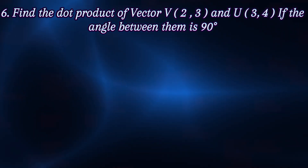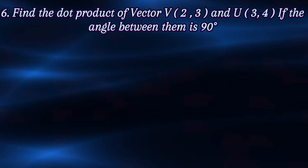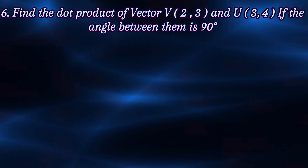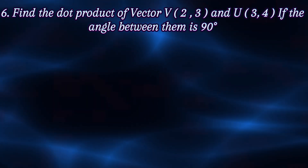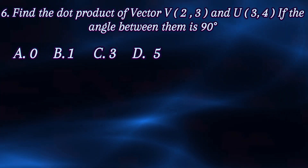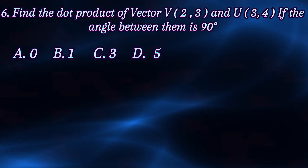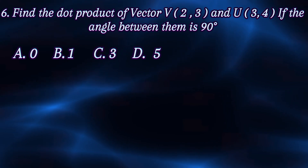Find the dot product of vector v (2,3) and u (3,4) if the angle between them is 90 degrees. Answer choices: a) zero, b) one, c) three, d) five.